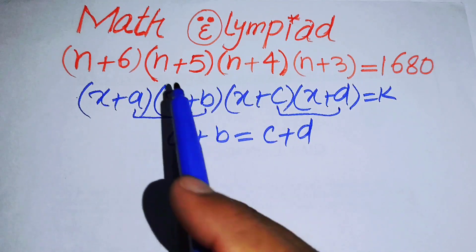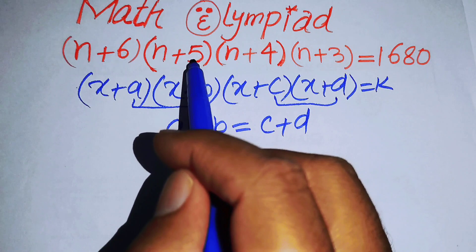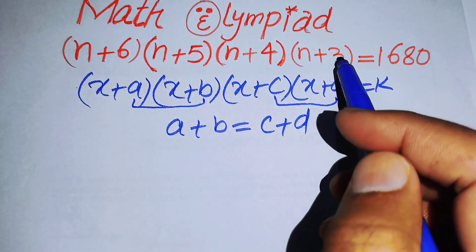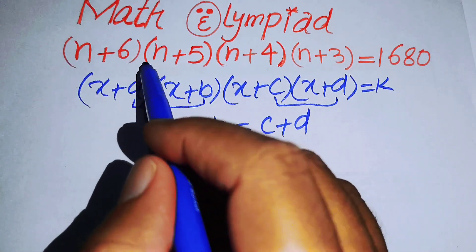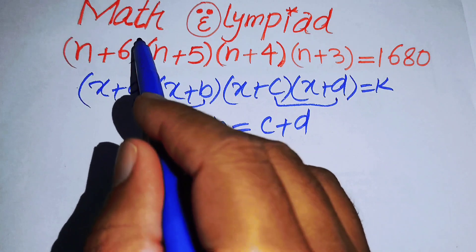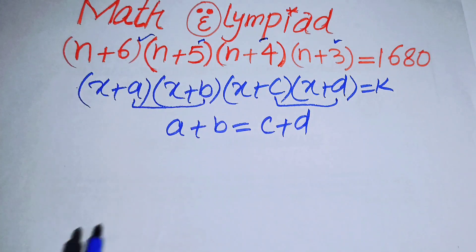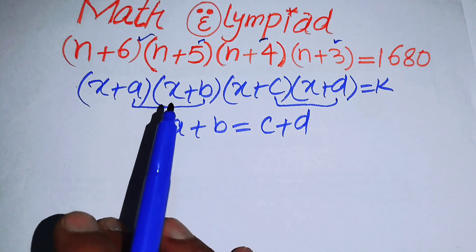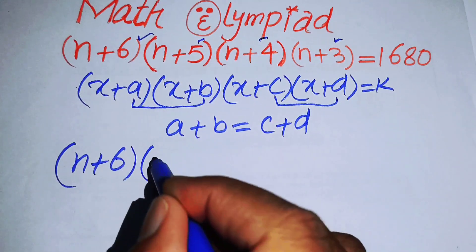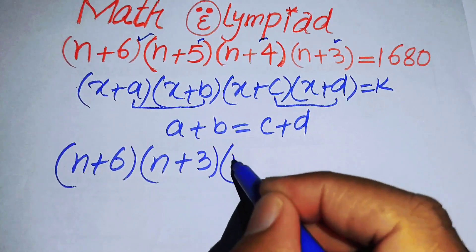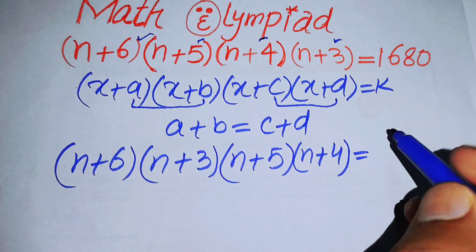Looking at our factors: 6+5=11 and 4+3=7, so they are not equal. But if we pair 6+3=9 and 5+4=9, they are equal. So we rearrange the factors as (n+6)(n+3) times (n+5)(n+4) = 1680.